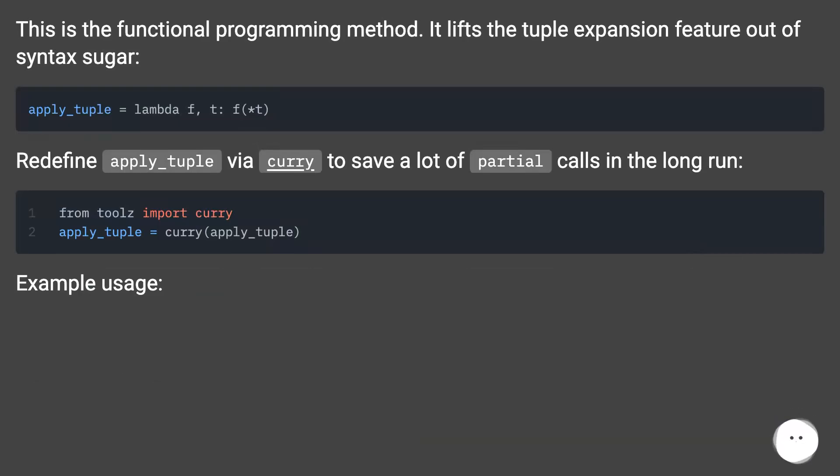This is the functional programming method. It lifts the tuple expansion feature out of syntax sugar. Redefine apply_tuple via curry to save a lot of partial calls in the long run. Example usage.